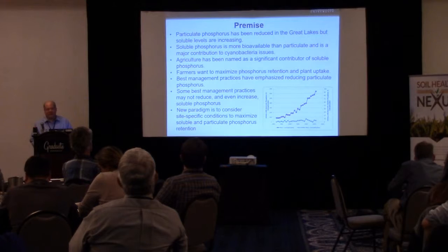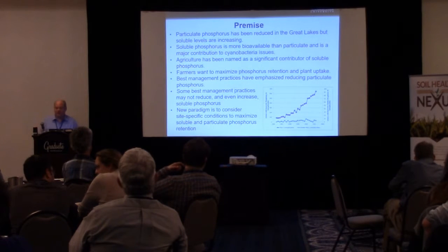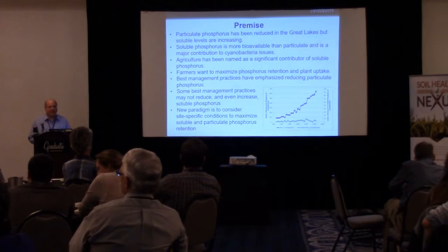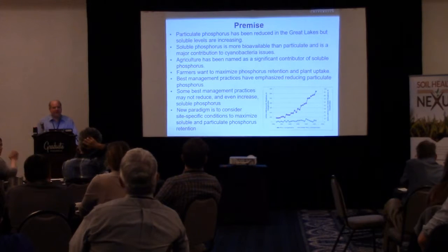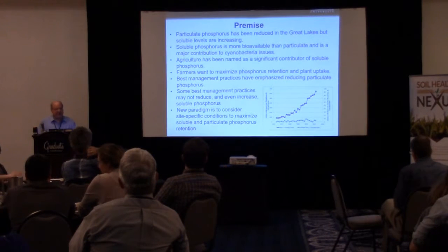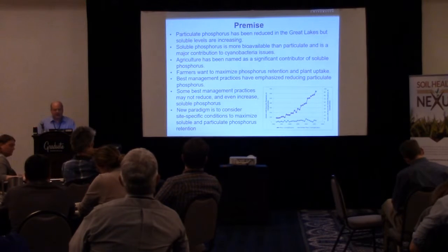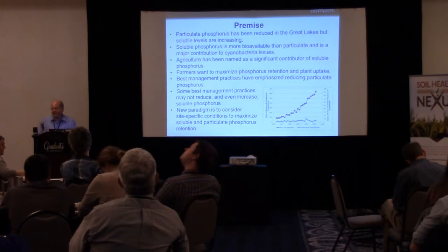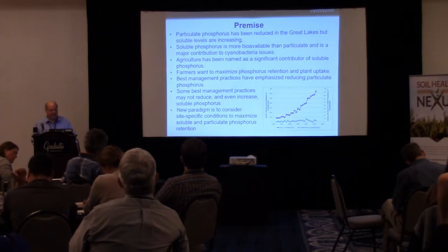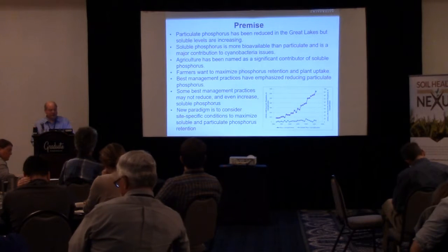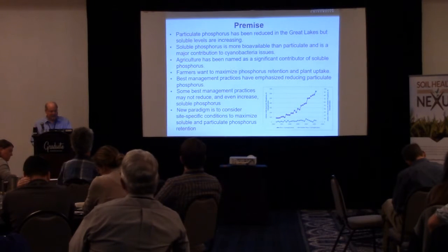I'm going to spend a few minutes on the premise of why we're looking at macropores and why we think it's so important, and this has to do with the phosphorus issue in freshwater lakes. Particulate phosphorus has been reduced to the Great Lakes, however soluble phosphorus levels are increasing. Soluble phosphorus is a big problem because it's 100% bioavailable, whereas particulate phosphorus is only 20% bioavailable, so a little bit of soluble phosphorus can have a very large impact. Agriculture has been named as a significant contributor to soluble phosphorus.